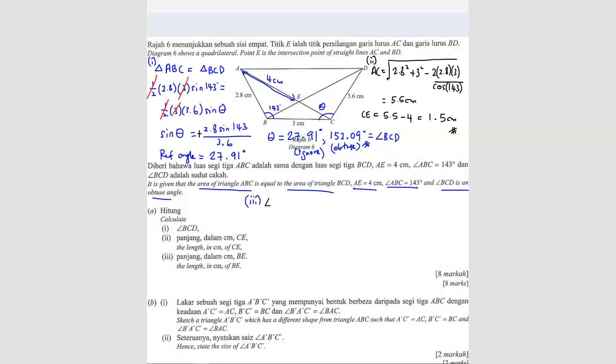Sine angle BAC over 3 cm equals to sine 143 over AC. Just now we found AC, 5.5. So you can bring this over and then shift sine. You will get your answer is angle BAC equals to 19.16 degrees. So now you found here, this angle is 19.16.